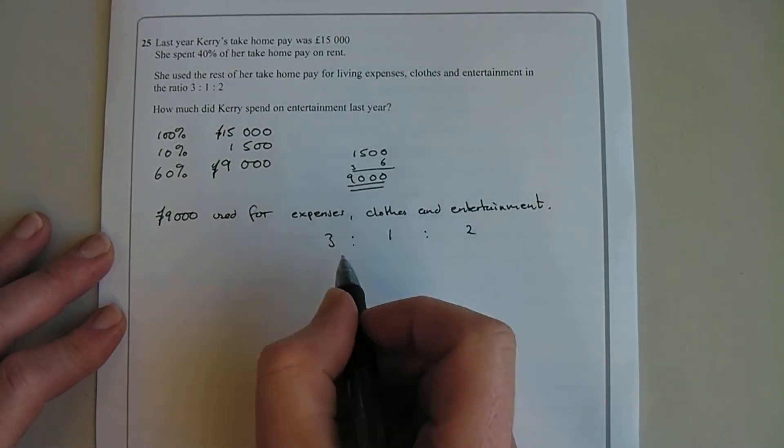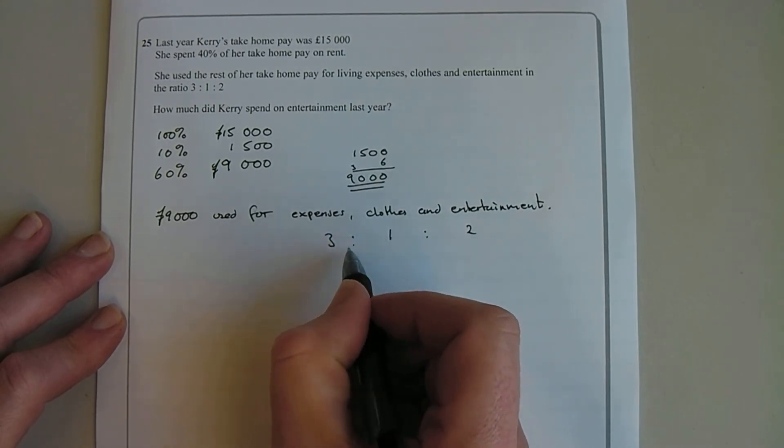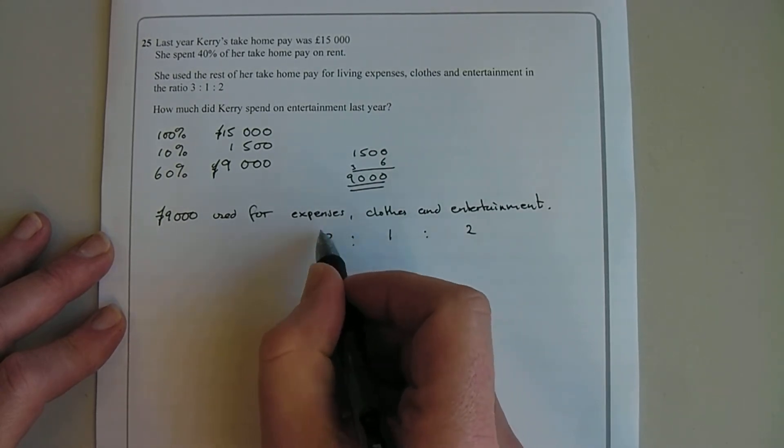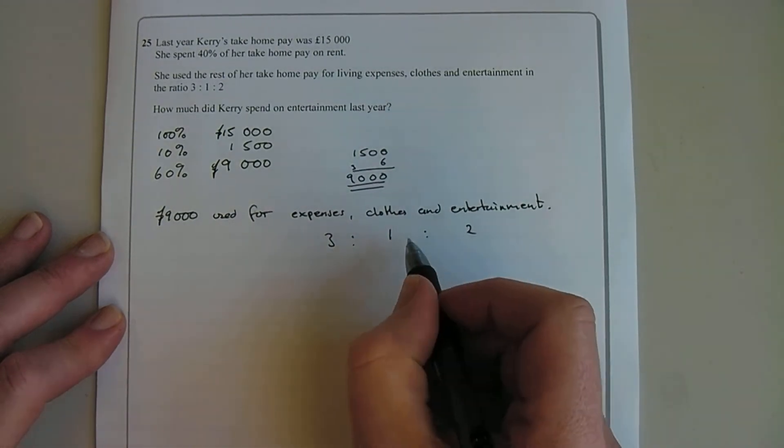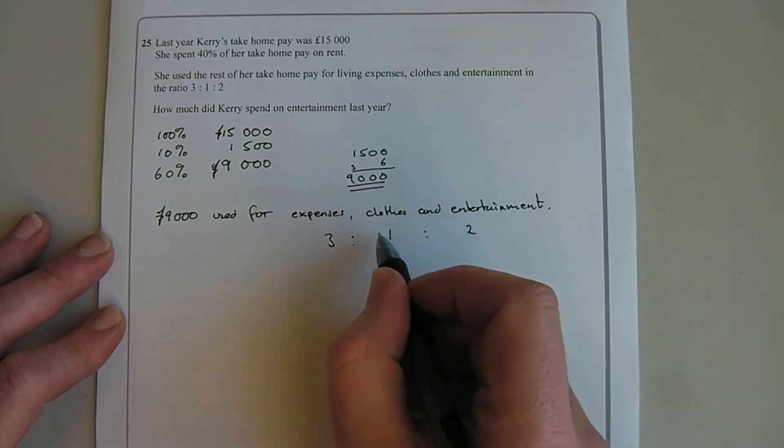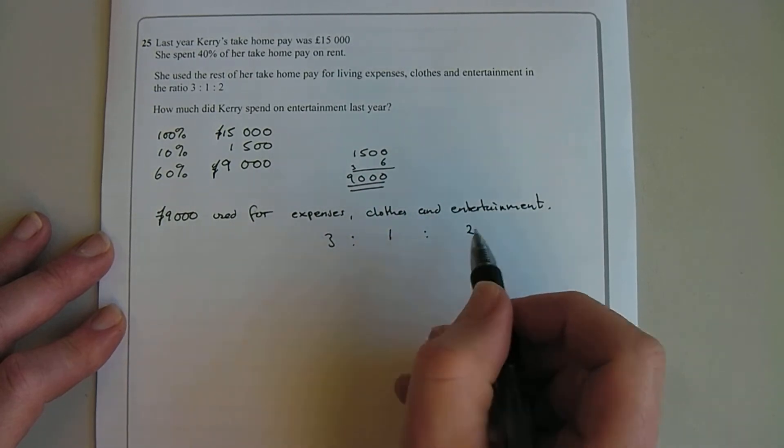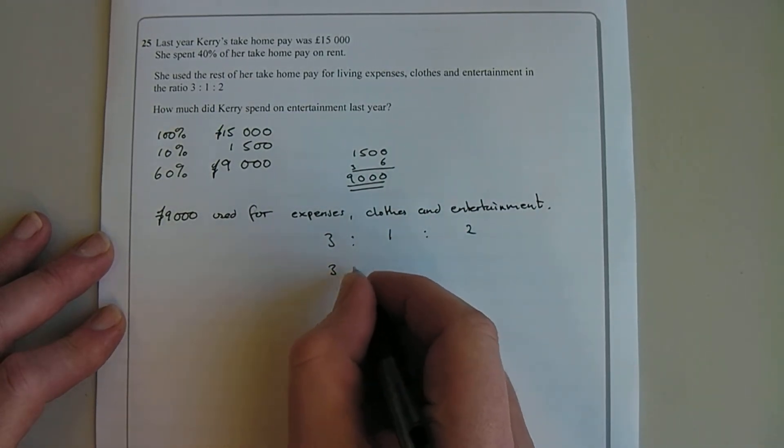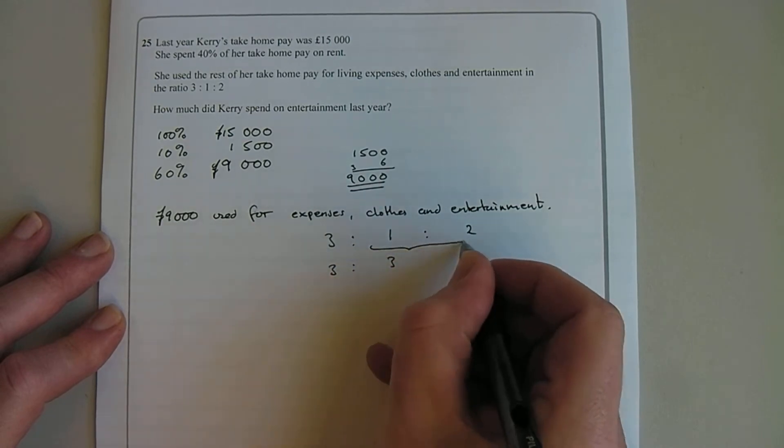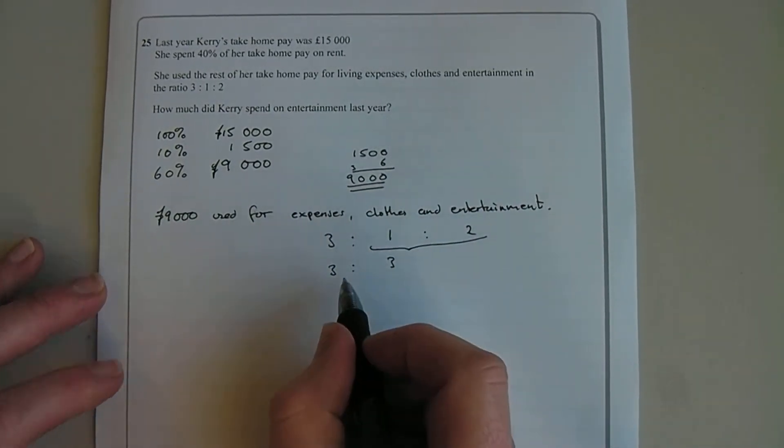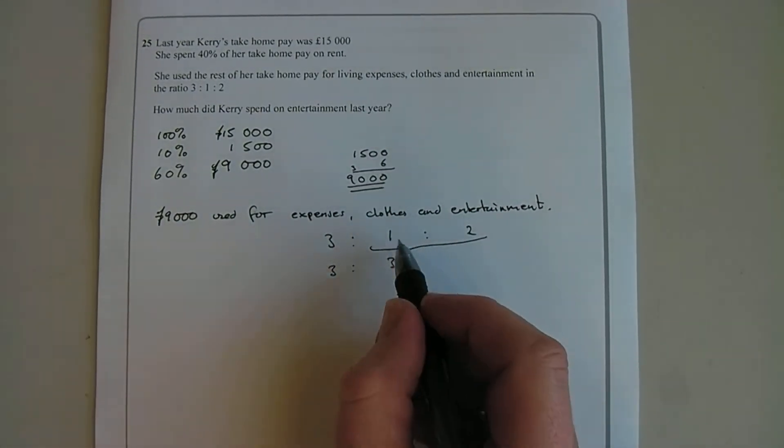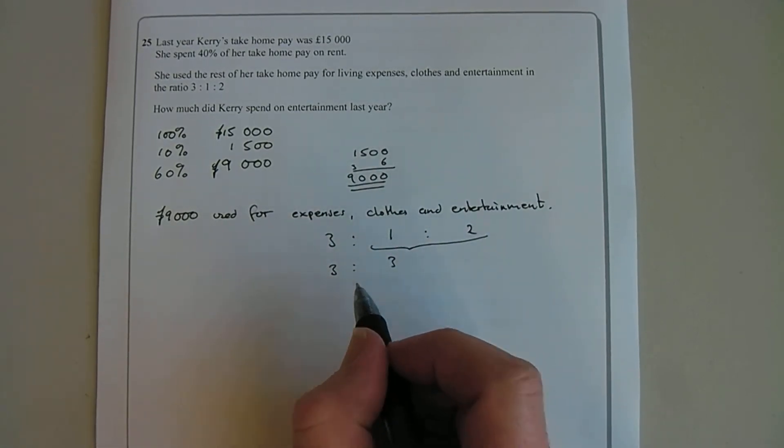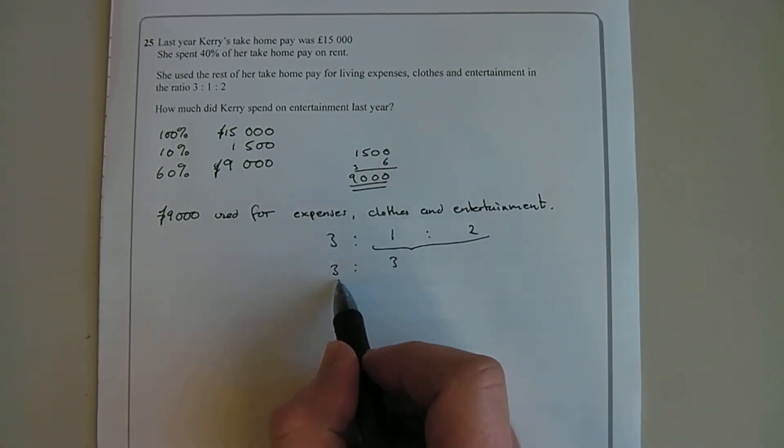We can see that three parts of what she's spending here is on expenses. And if I added the clothes and the entertainment, then that's three parts spent on clothes and entertainment as well. So I'm just going to go 3 to 3. And I'm just going to add these two together. So now I know I've got three parts for expenses and three parts for clothes and entertainment. Then I can split my £9,000 equally between these two.